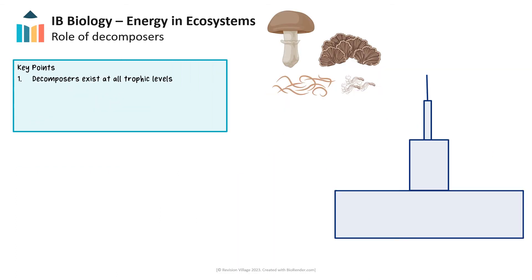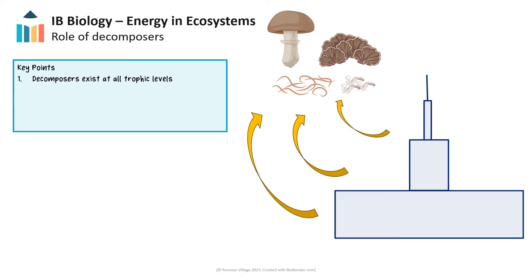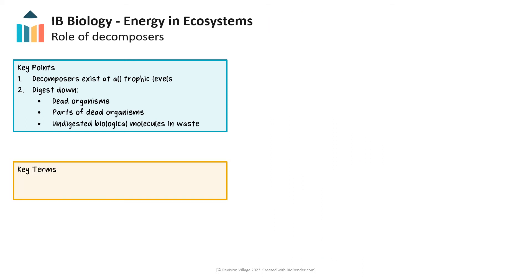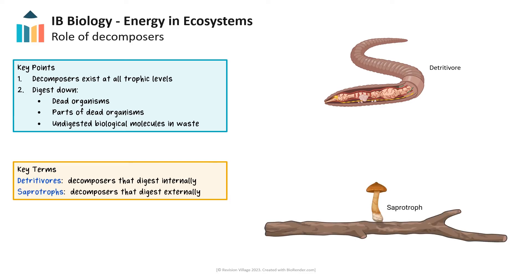Now that we've looked at food chains, let's consider how decomposers fit into food chains and food webs. These essential organisms are responsible for breaking down unused biological molecules in waste and dead organisms. They are typically not represented in food chains or pyramids of energy because they exist at every level of the food chain and food web. Decomposers digest dead organisms, parts of dead organisms, and break down undigested biological molecules in waste. Decomposers can be categorized as detritivores or saprotrophs. Detritivores rely on internal digestion, like an earthworm who consumes dead organic tissue, then digests it internally and excretes waste.